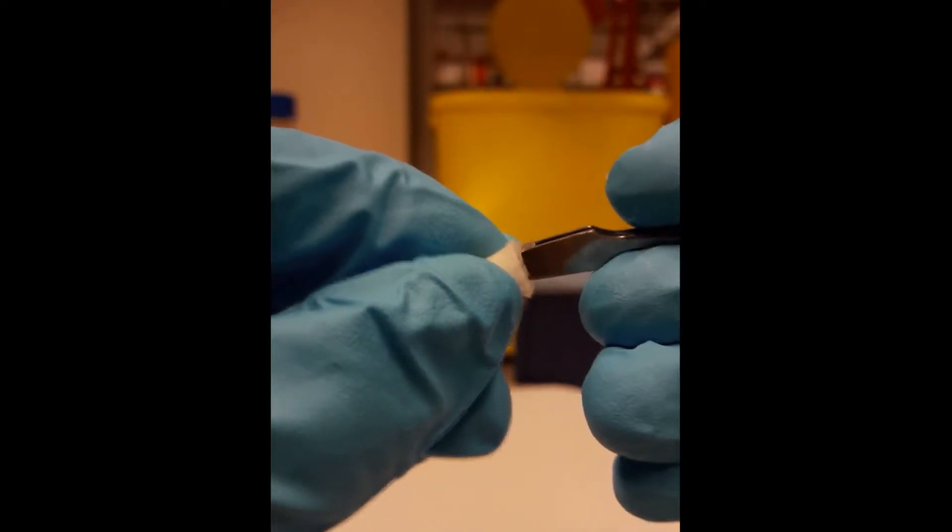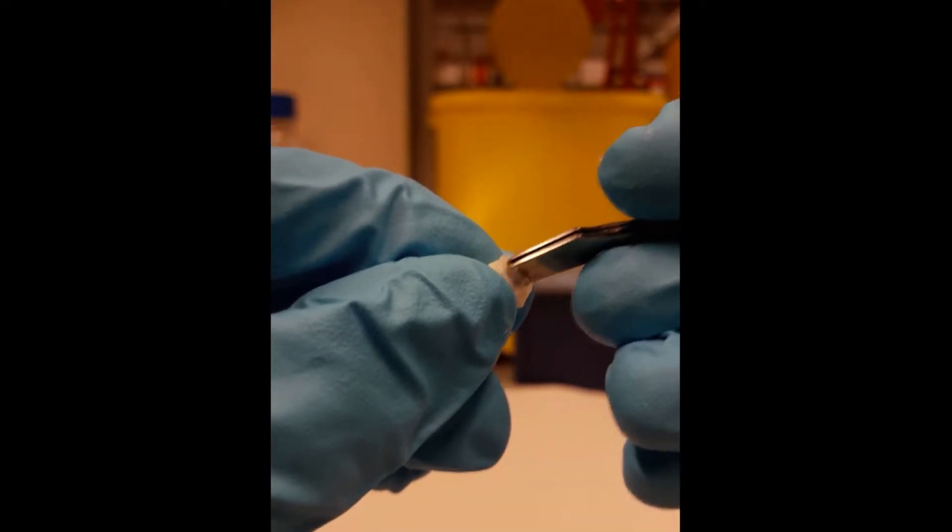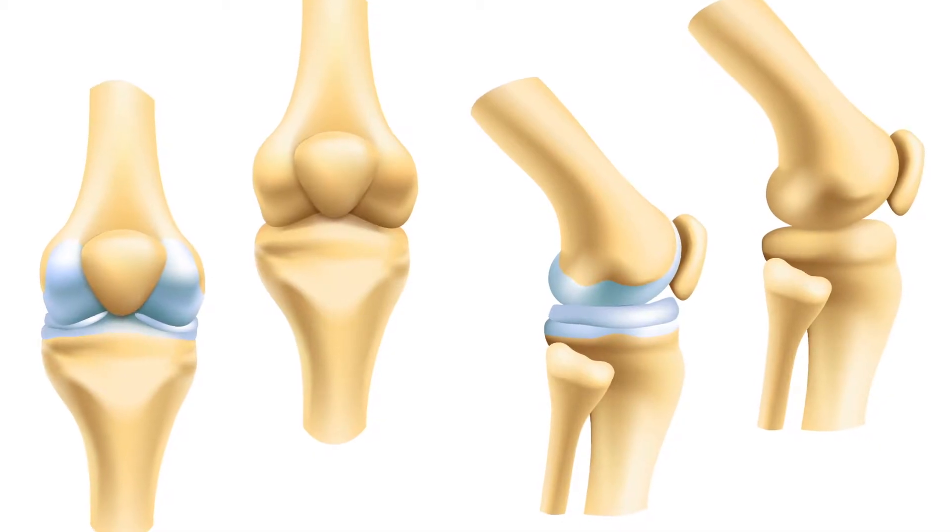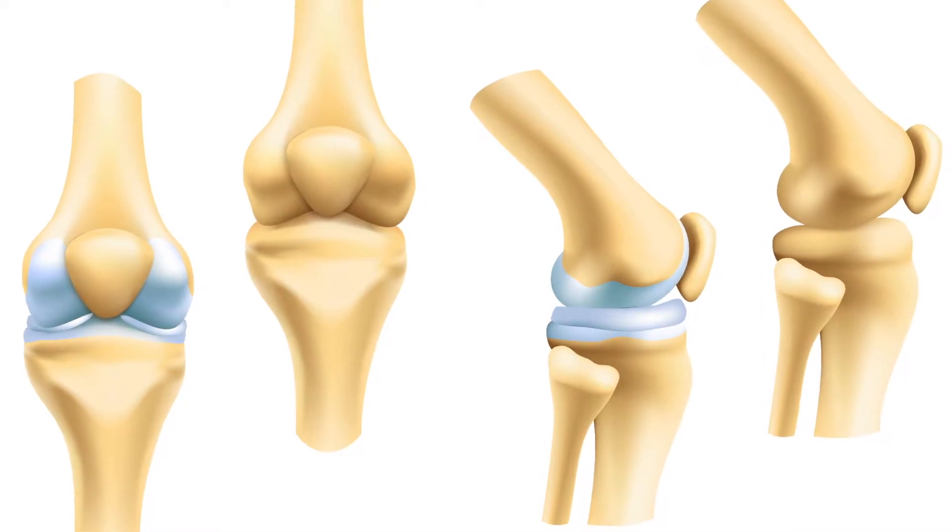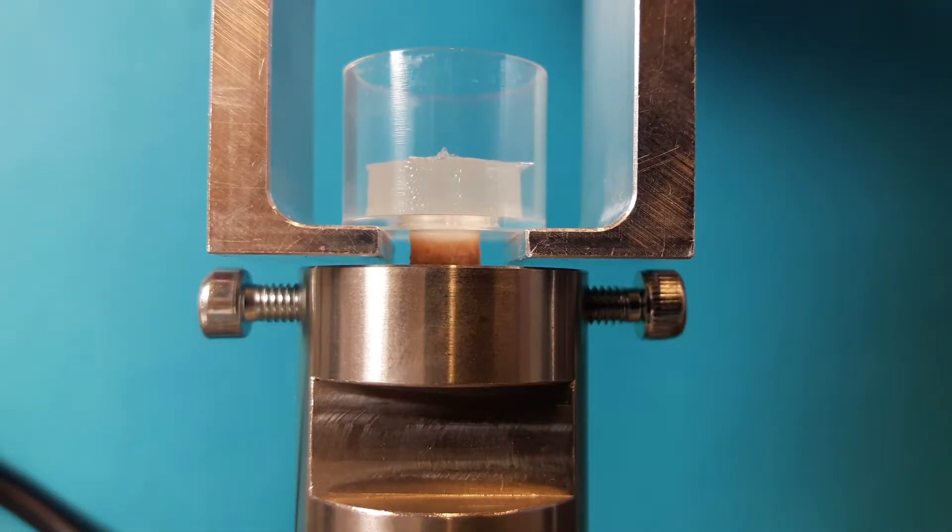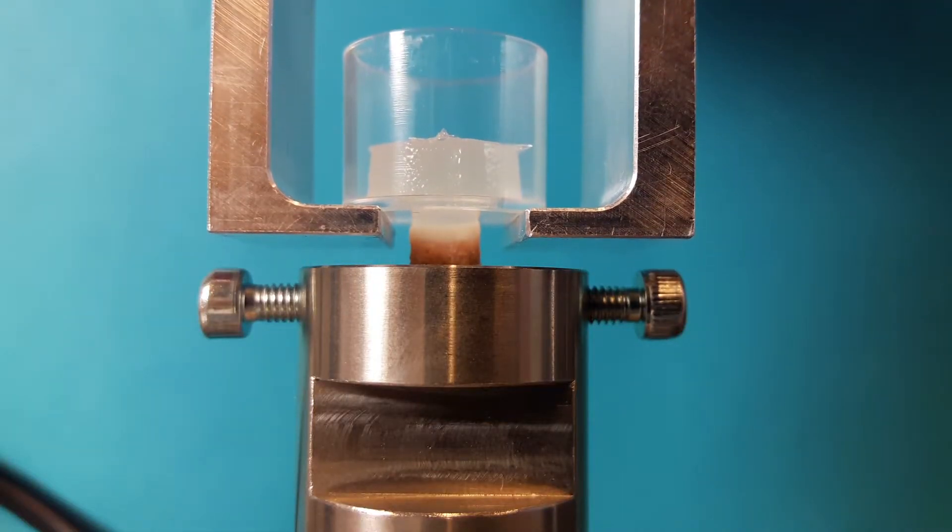This tough adhesive composite has the particularity to be very adhesive to soft biological surfaces such as cartilage or meniscus. Compared to currently available adhesives like fibrin, we could improve adhesion to articular cartilage around 10 times. So when we implant the gel, it sticks there.